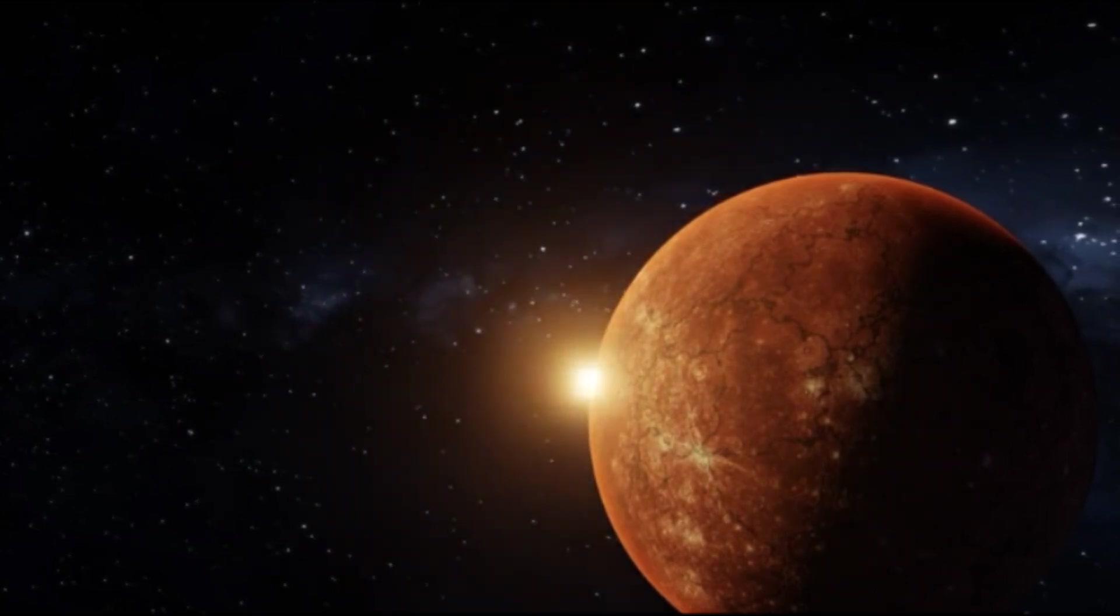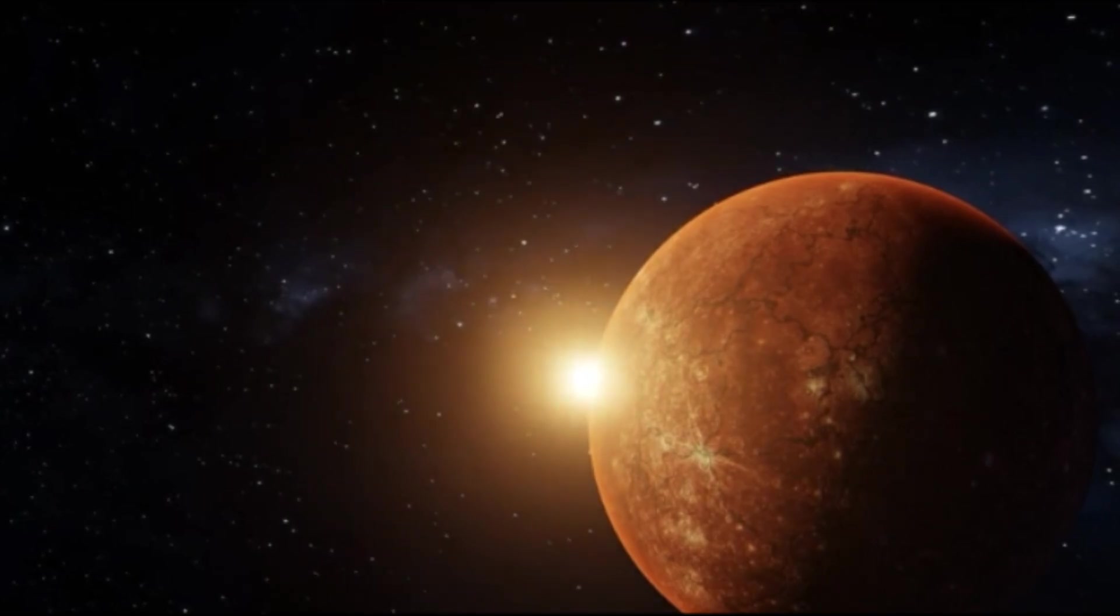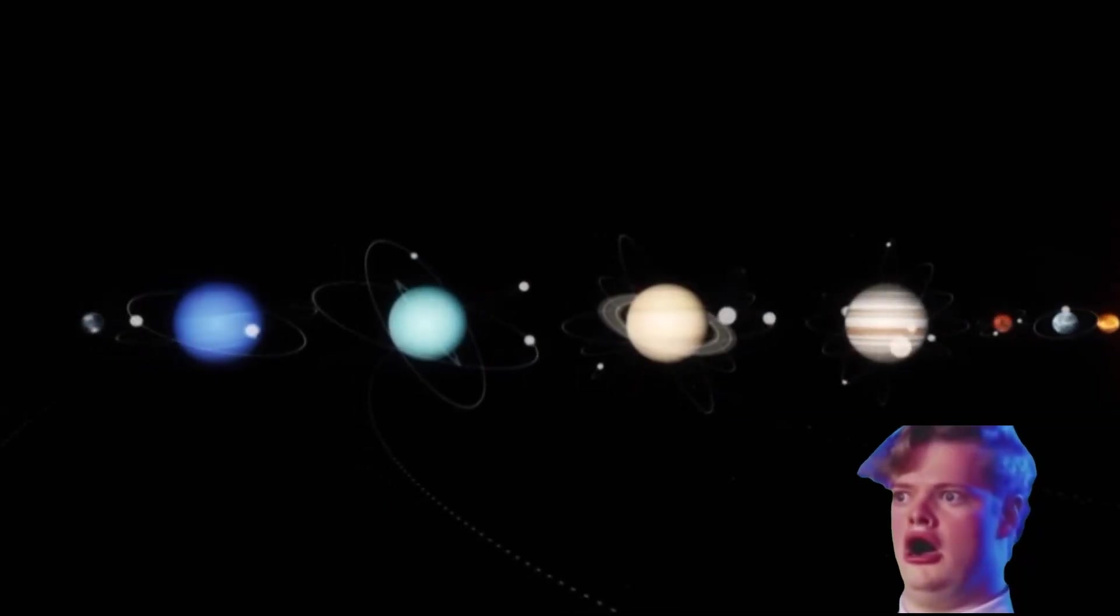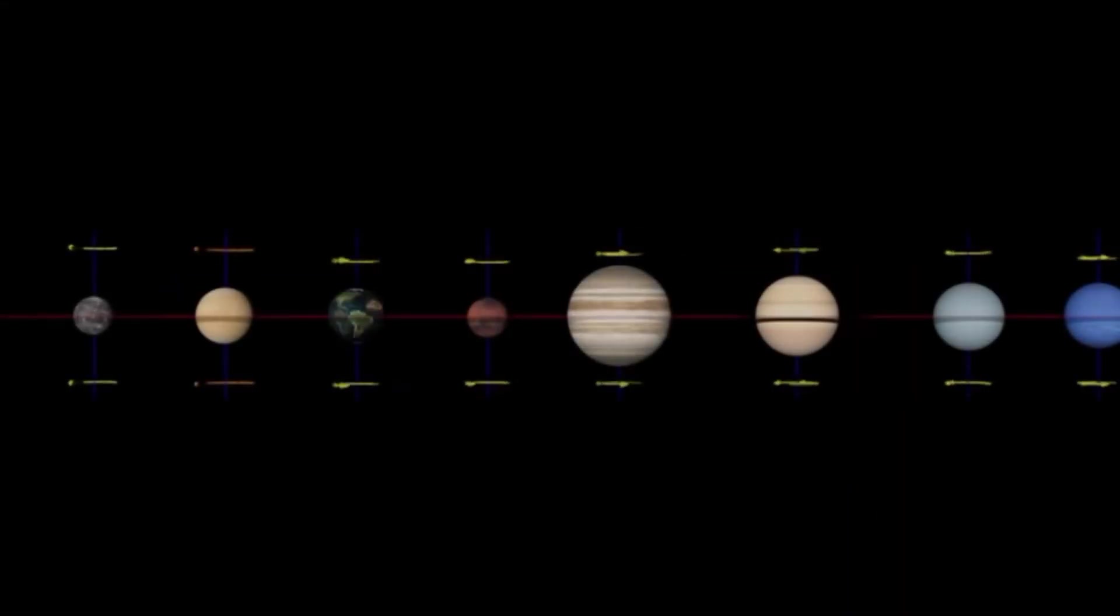How long are days on Pluto? It rotates on its axis in 6.3 days in a direction opposite to most planets, similar to Venus.